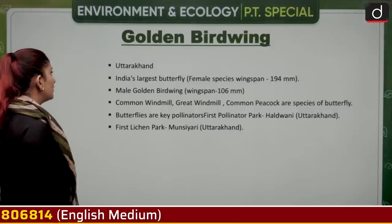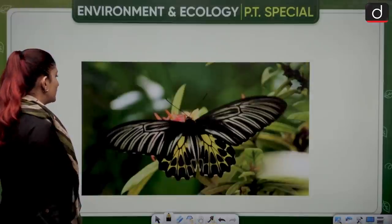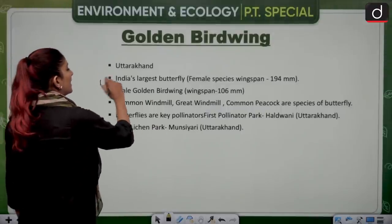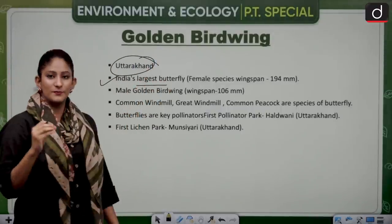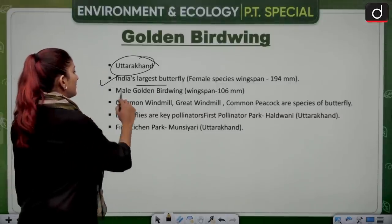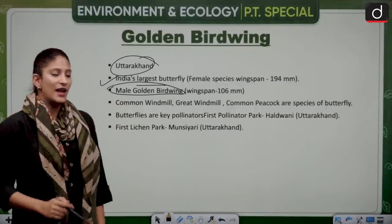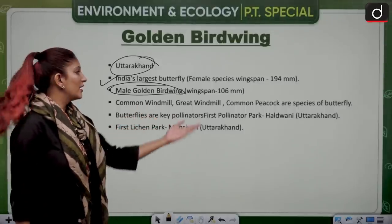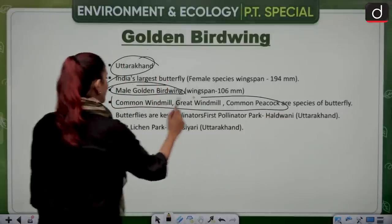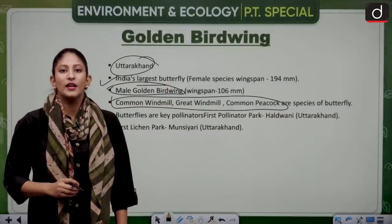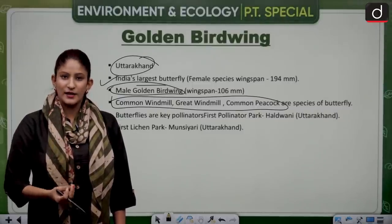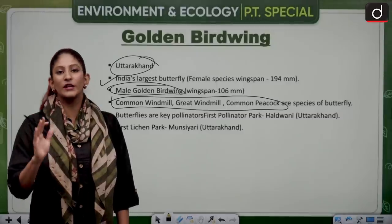The golden birdwing is a butterfly and India's largest butterfly, found in Uttarakhand. The female species' wingspan is greater than that of the male golden birdwing. Common windmill, great windmill, and common peacock are other species of butterfly. This could be asked in prelims — common peacock, common windmill, great windmill are all species of butterfly, not birds or insects. Butterflies are key pollinators responsible for pollination and, consequently, reproduction in plants.